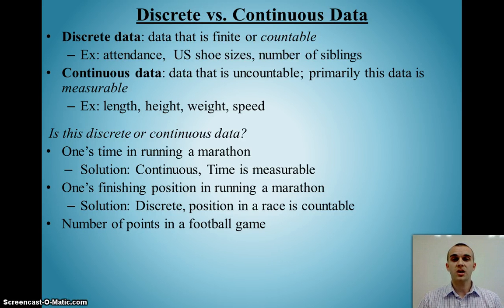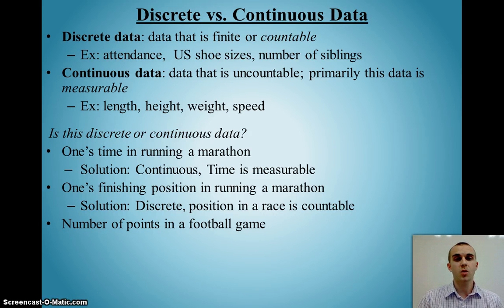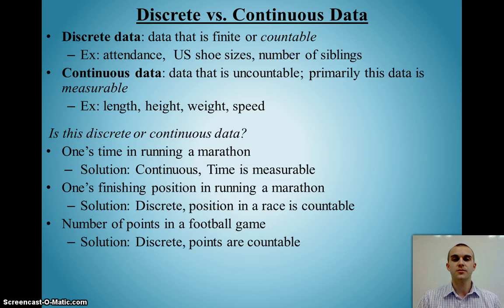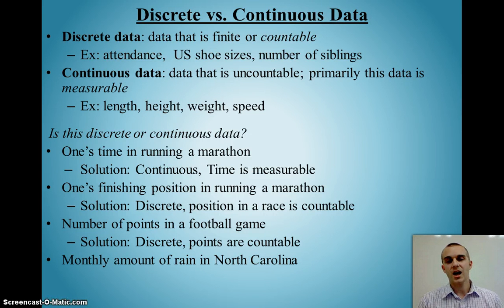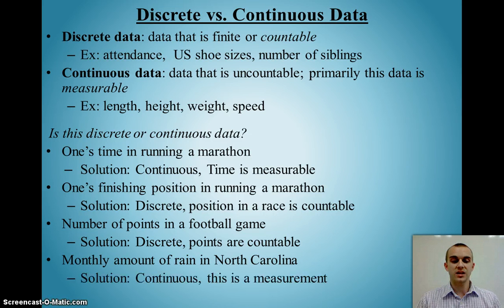The number of points in a football game — again, that's countable. I can count: we scored 3 points, 7 points, 21 points. I can count that and compare it with the other team as well. The last one is the monthly amount of rain in North Carolina. With this, I'm measuring how much rain occurred, and once I'm measuring, most likely that's going to be continuous data.